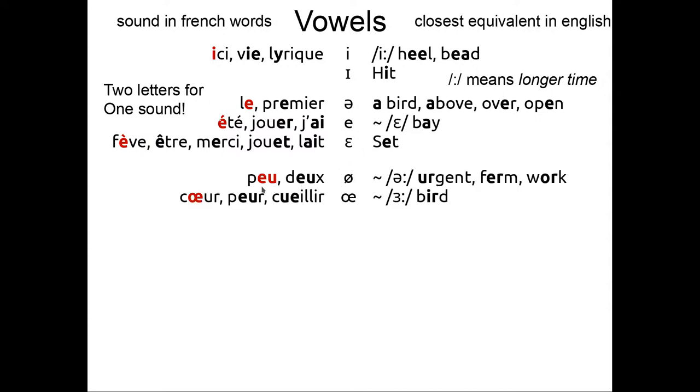The letter E can be combined with the letter U to form the Ø sound. Like in peu or deux. In English you have like urgent, firm, work. And sometimes the letter EU can be pronounced ŒR, like in cœur, peur, couleur.